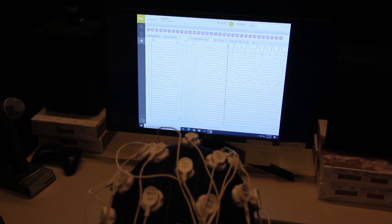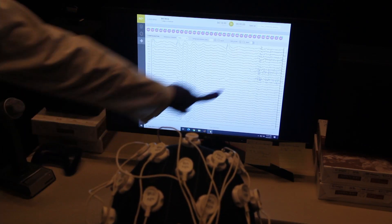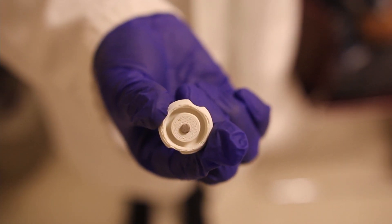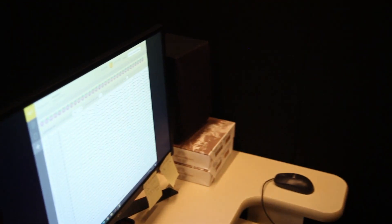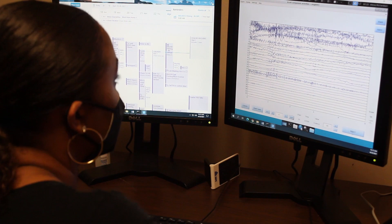EEG is a noninvasive imaging test that measures brain waves by using a cap with sensors in it. The brain waves will show up on an EEG recording as wavy lines, giving us a snapshot in time of the electrical activity in your brain.